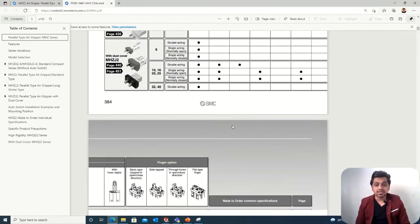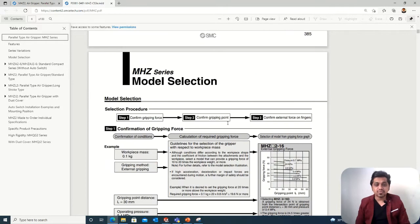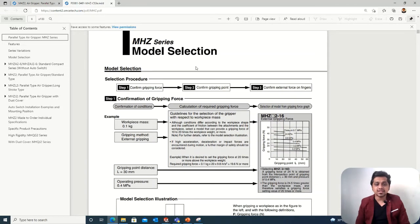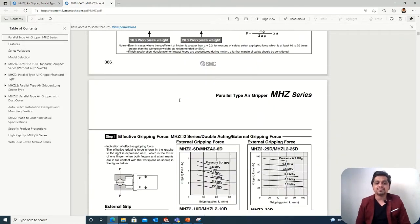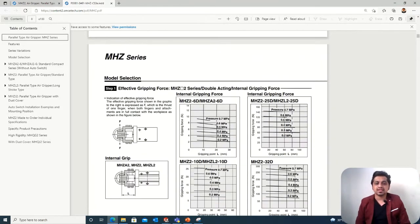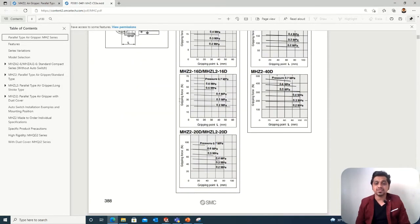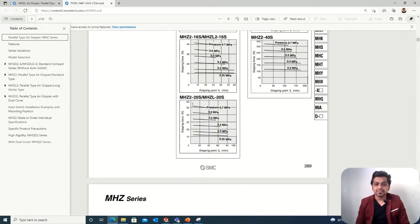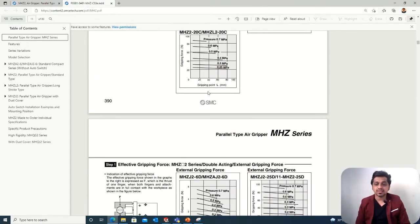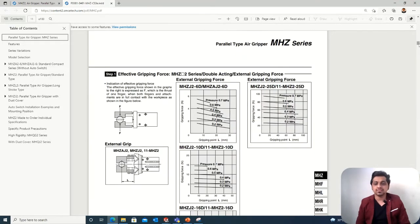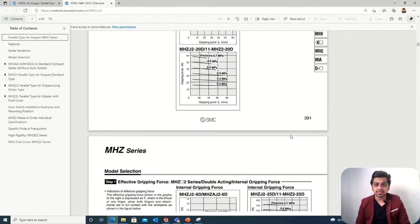You can see whether it's double acting or single acting - all this information you can see. Then the model selection steps they've mentioned - how we can select the model. That's our part of interest. The graphs they've given for different kinds of series also play an important role. You can select the part from these graphs very effectively.